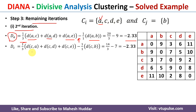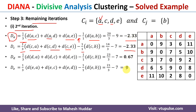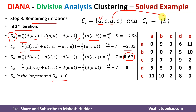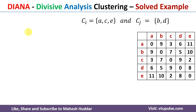We continue similarly for D and E, obtaining all four average dissimilarities. The average dissimilarity of D is positive and greater than all other values. Therefore, we select D, remove it from Ci, and add it to Cj. After the second iteration: Ci = {A, C, E} and Cj = {B, D}.